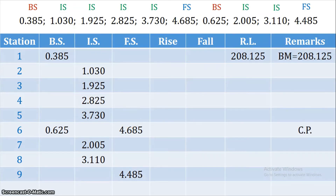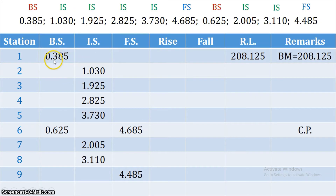Now we calculate the rise and fall. In the rise and fall method, within one instrument setting, we take the difference between consecutive readings. For example, 0.385 minus 1.030 is negative — that is a fall. Similarly, 0.385 minus 1.030 gives a negative value, indicating fall. Since the ground is continuously sloping downward, all differences will be negative, meaning all values fall in the fall column.